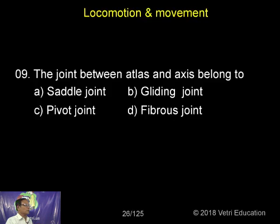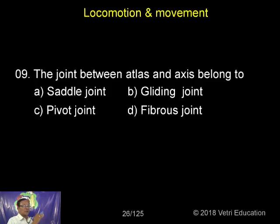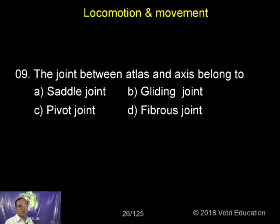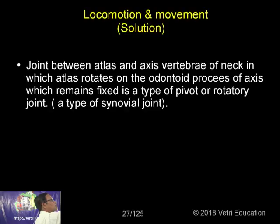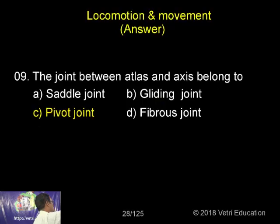On the atlas is placed the skull bone. So the skull is placed on the atlas, the atlas is placed over the axis, and the axis has an odontoid process which acts as a pivot. So the joint between atlas and axis is an example of a pivot joint.